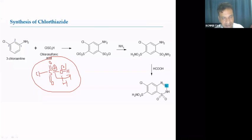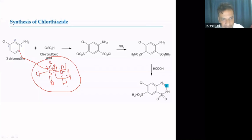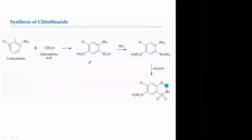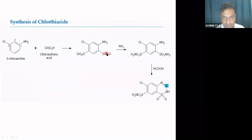The aromatic ring acts as a source of electrons and pushes its electron pair toward the electrophilic sulfur, forming a bond. The SO₂Cl group attaches at a specific position on the phenyl ring via electrophilic aromatic substitution.